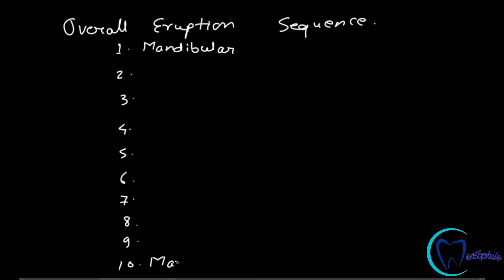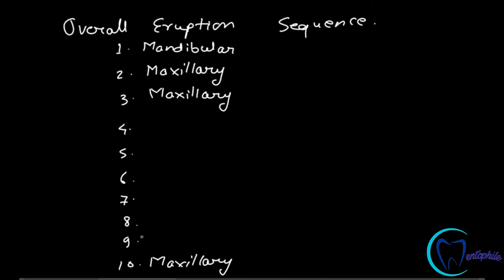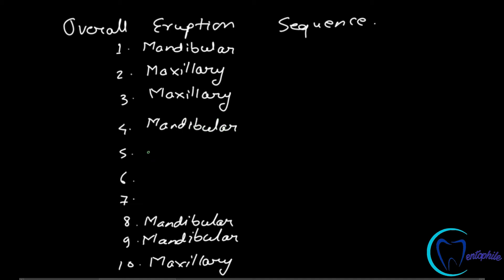The last tooth to erupt will be maxillary. We alternate between mandible and maxilla: if the first tooth is mandibular, the second is maxillary. Then for the third tooth, instead of mandible, there is again eruption of another maxillary tooth — this is like an exception in the rule. Similarly in the last two teeth, since the ninth is mandibular, the tenth is also mandibular rather than maxillary. Besides these exceptions, there is alternation in eruption between maxillary and mandibular teeth for positions four through eight.